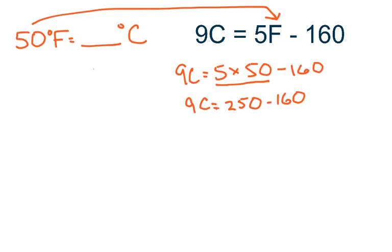Now the only thing left I can do right here is to subtract. So 250 minus 160 should be 90. Bring everything else straight down. And so 9C equals 90. The last step is divide both sides by 9. And then I get Celsius equals 10 degrees.